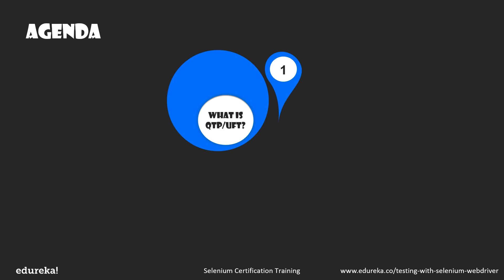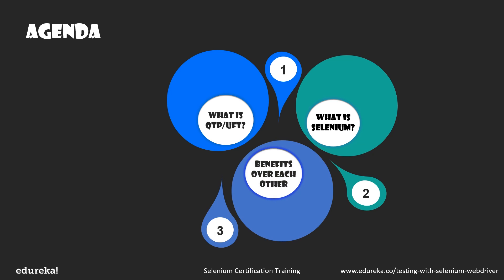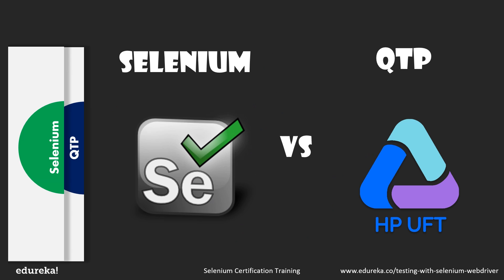We'll start this session by understanding what QTP is and learn about the automation process that takes place in this tool. Then we'll discuss another automation testing tool, Selenium, and know its features. Once we're done with that, we'll look at the operations carried out by each tool, the advantages of these tools over each other, and finally wrap up by comparing them based on some parameters. Now, let's get straight to the first topic: What is QTP?